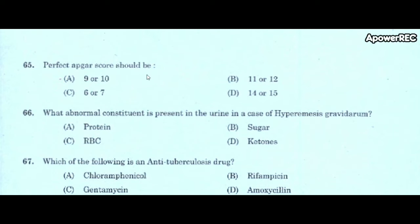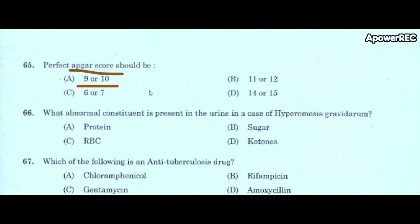Next question: perfect Apgar score should be A) 9 or 10, B) 11 or 12, C) 6 or 7, D) 14 or 15. Correct answer is 9 or 10. The Apgar score is a test performed on newborn babies at 1 minute and 5 minutes after birth. This test was founded by Virginia Apgar.